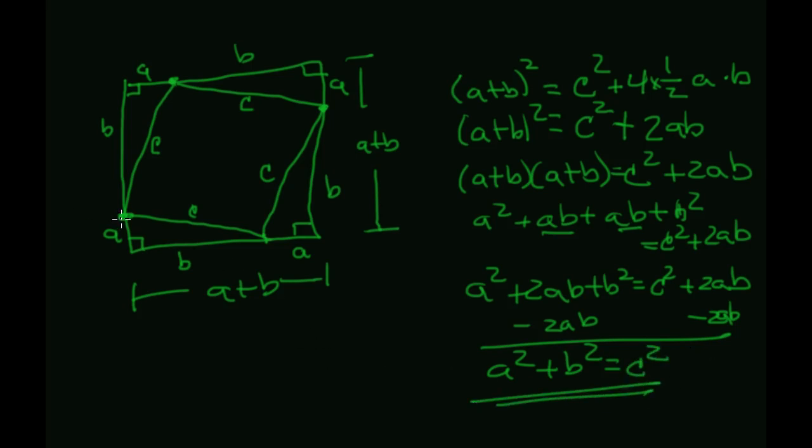Voila! So given a right triangle, A, B, C, we know that the A squared plus the B squared is equal to the C squared. That is the proof of the Pythagorean theorem. We've got it. All right, so where do we go from here?